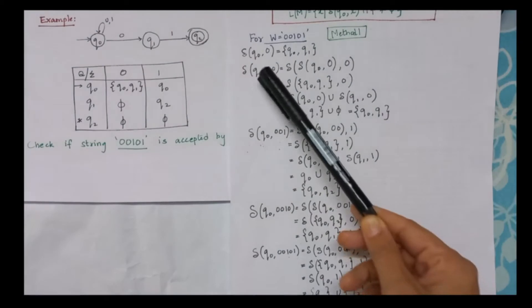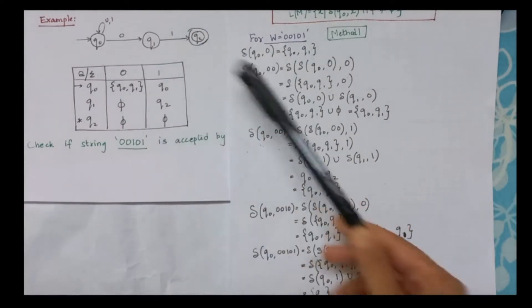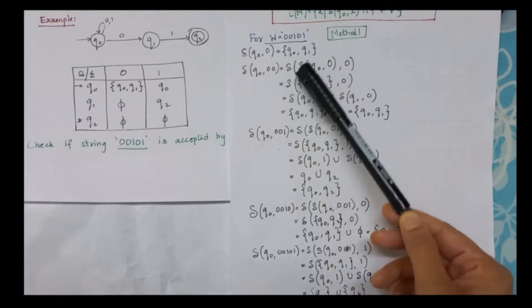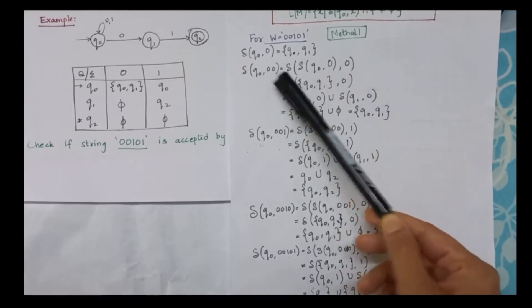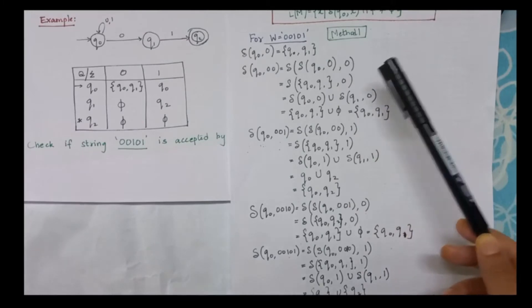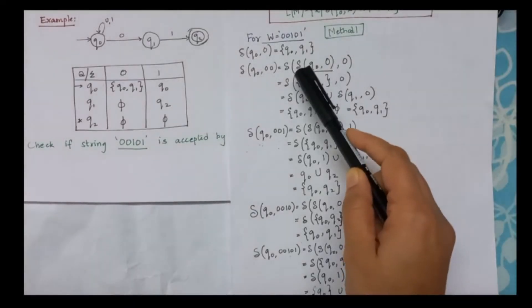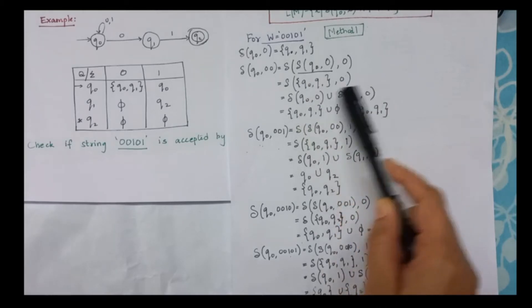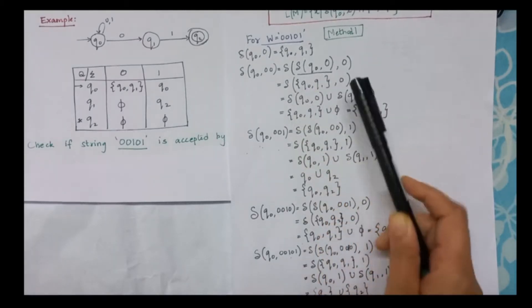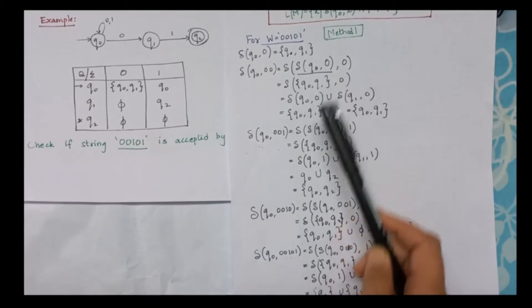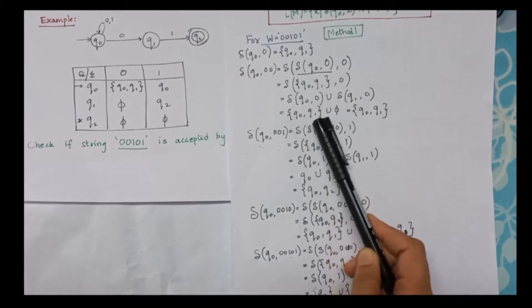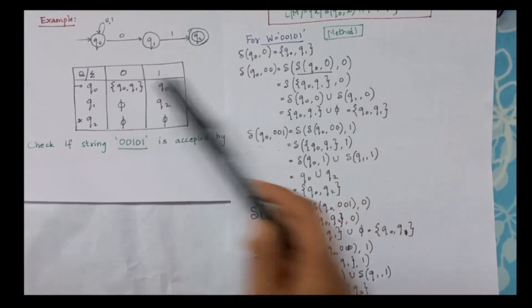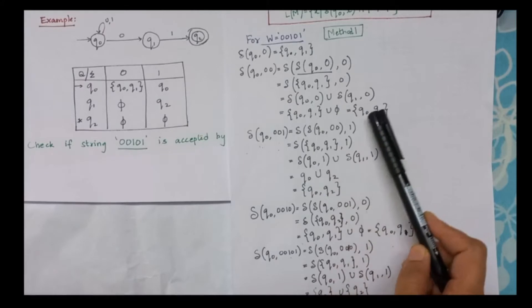In the next step, let us consider delta of q0, the first two symbols, equal to delta of delta of q0, 0, comma 0. We are splitting this 0 and 0. I know that delta of q0, 0, derived in the last step, is nothing but q0, q1. So when we split this we get delta of q0, 0 union delta of q1, 0. Delta of q0, 0 is q0, q1. q1 with 0 gives me null, so any set union null will be the set itself.